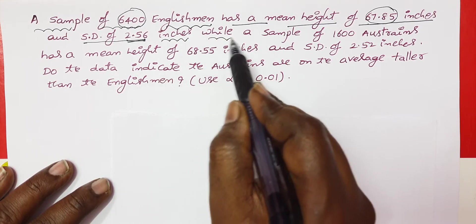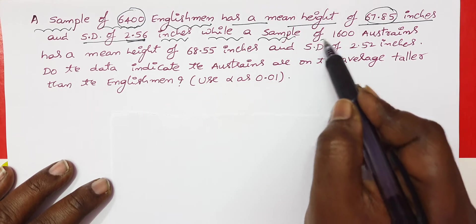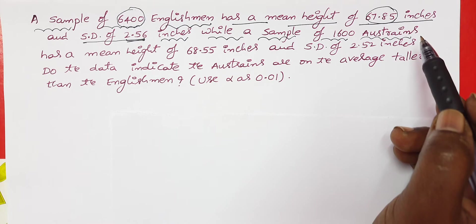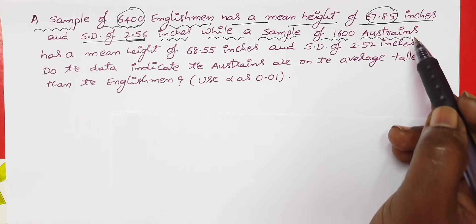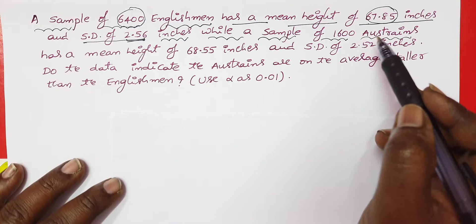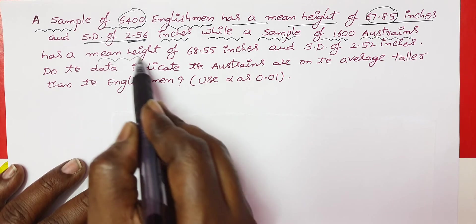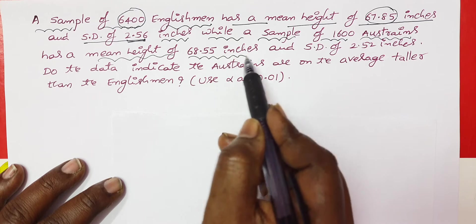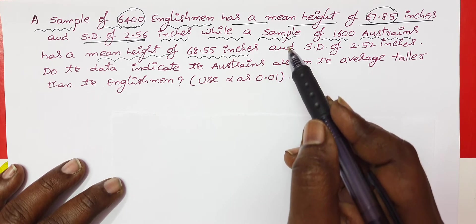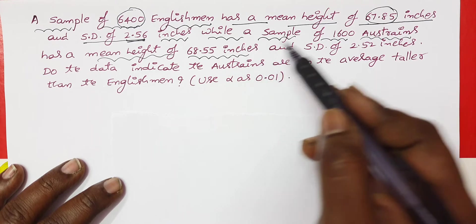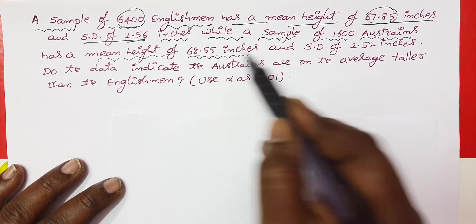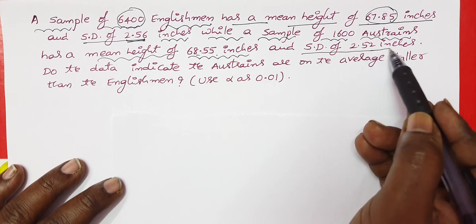While a sample of 1600 Austrians has a mean height of 68.55 inches and a standard deviation of 2.52 inches.